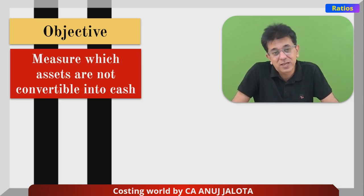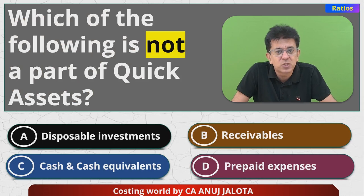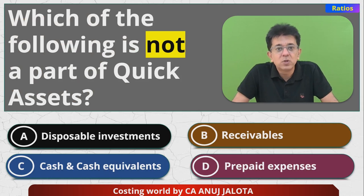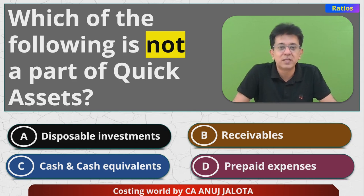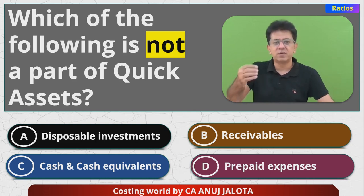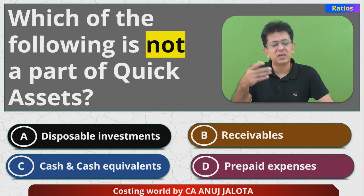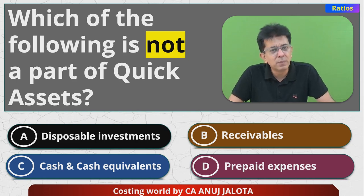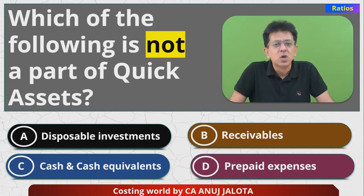I've explained three of them, so obviously the answer is going to be the last one. Let me explain prepaid expenses. Suppose I have a policy of prepaying my electricity bill — I pay the Adani company, who supplies electricity, for 12 months in advance, say 1 lakh rupees. In the middle, if I decide they have overcharged me and ask for a refund, they will not refund because it has already been prepaid.